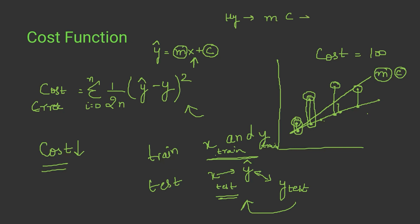So this is how a linear regression model works: it has a hypothesis, we give it random m and c values, it finds the cost function, and we reduce the cost by updating m and c values. The question arises: how do we update m and c values? To answer that, we have a very important concept — the gradient descent algorithm — which we will understand in the next lecture.